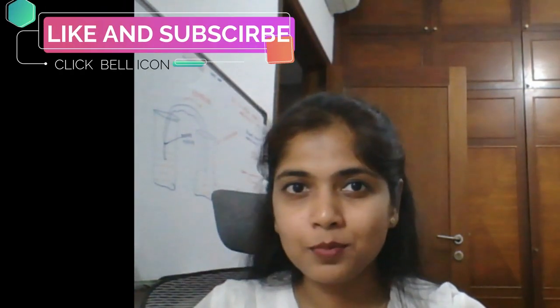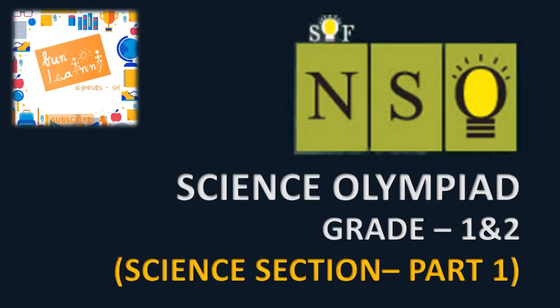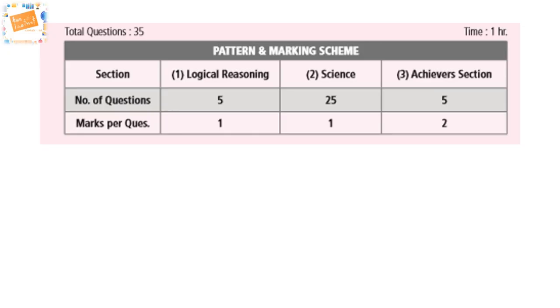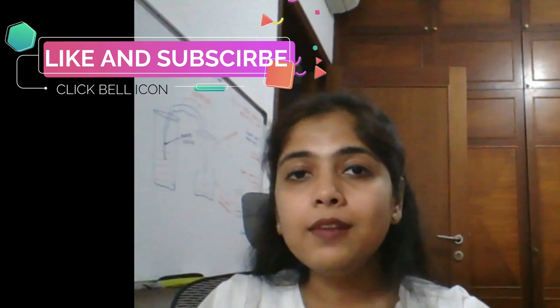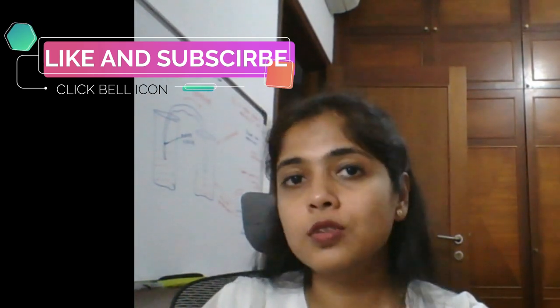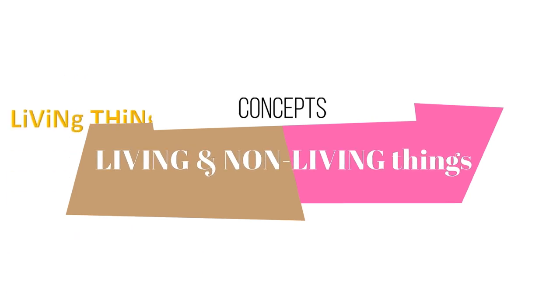Hi kids, welcome back to Fun Learning! Are you ready for today's Olympiad preparation? Today we are going to do the Science Olympiad for Grade 1 and Grade 2, concentrating on the science section. In this section there are various topics, but what we'll focus on are three topics: living and non-living things, plants, and human body. As we go through these, we'll also revise the concepts.